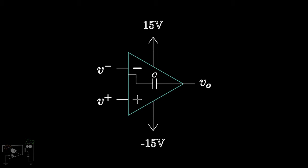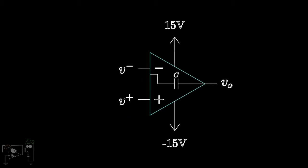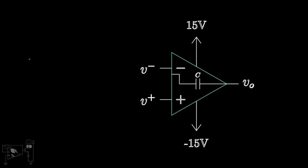Let C be the value of the internal compensation capacitance. Then, the charging current IC through the capacitor is given by C times dVC by dt, where VC is the voltage across the capacitor. Rearranging, we get dVC by dt equals IC by C.